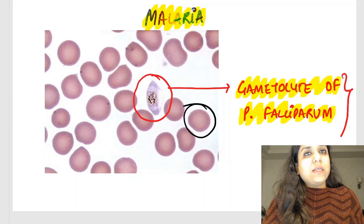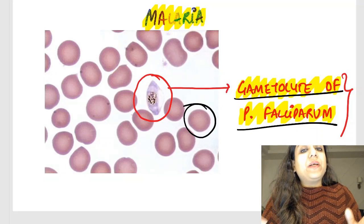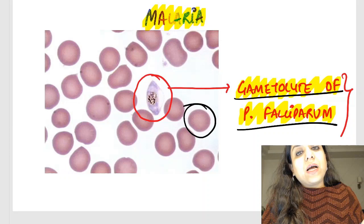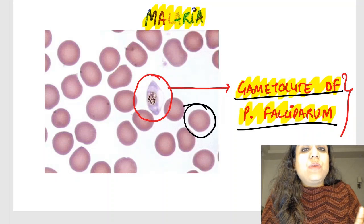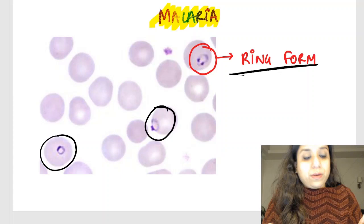What is this? These are the RBCs, and what I see here is the gametocyte of Plasmodium falciparum — another spotter which can be asked in exams. They can give a history of a patient with fever with chills and rigors, splenomegaly, and give this peripheral smear asking for the diagnosis: it is Plasmodium falciparum malaria. Also, here you can see a ring-like thing inside the RBC — this is the ring form of malaria.